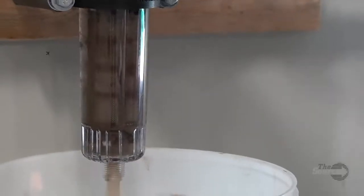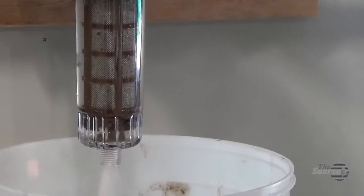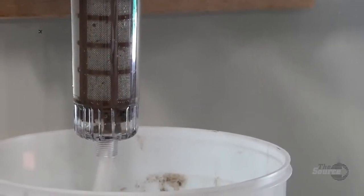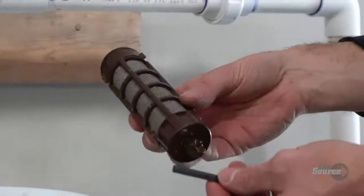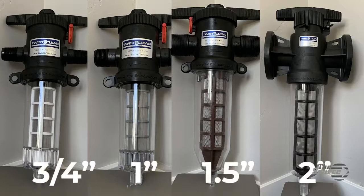through the filter. The stainless steel screen ensures a long life. Twist to Clean filters come in four inlet/outlet sizes: three-quarter inch, one inch, one and a half inch, and two inch. There are also five different screen